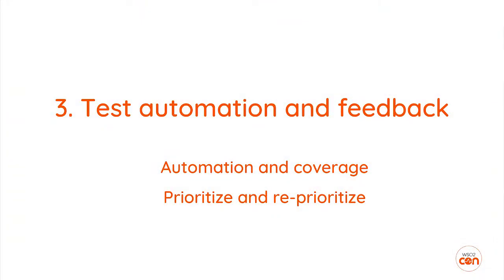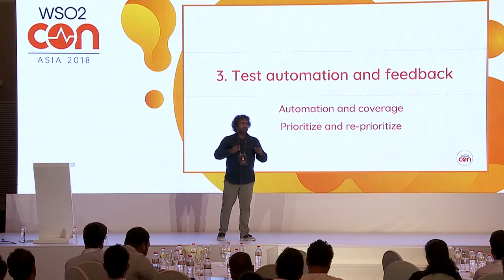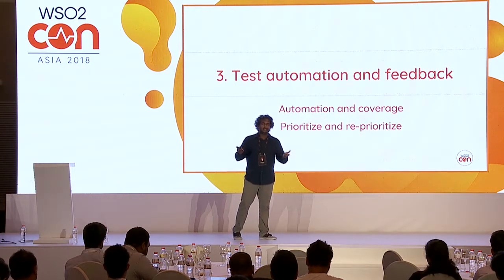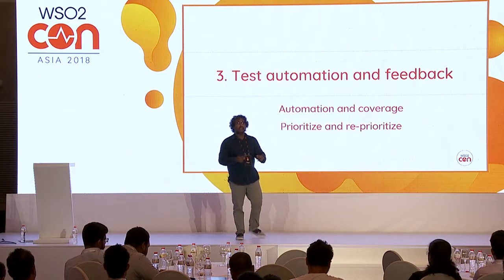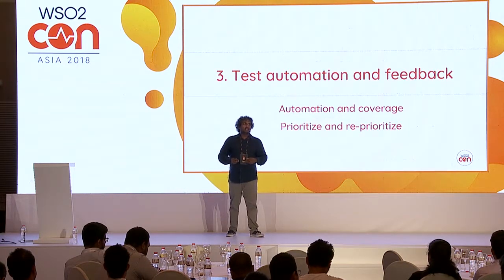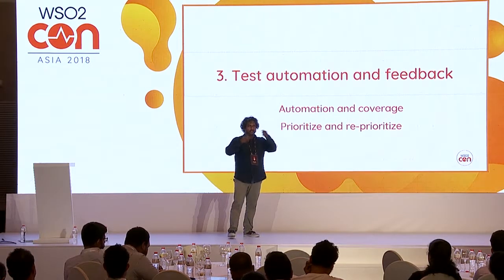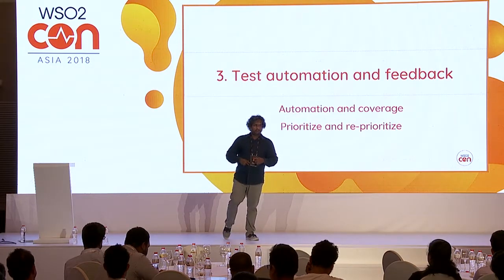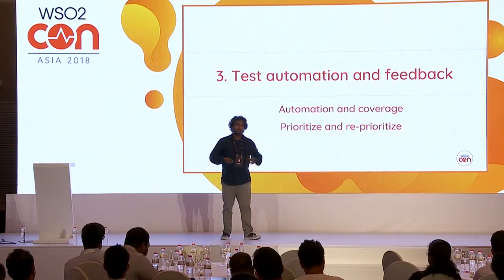Number three: test automation and feedback. Test automation is something we all love to have. When delivering large amounts of changes, we need full test coverage, but in reality that's not always practically possible due to time constraints. Usually people pick and choose critical business flows and add coverage for those. But you can't stop there — you have to always come back, revisit your test coverage, prioritize, find additional flows, and try to improve coverage until you reach a safe point.